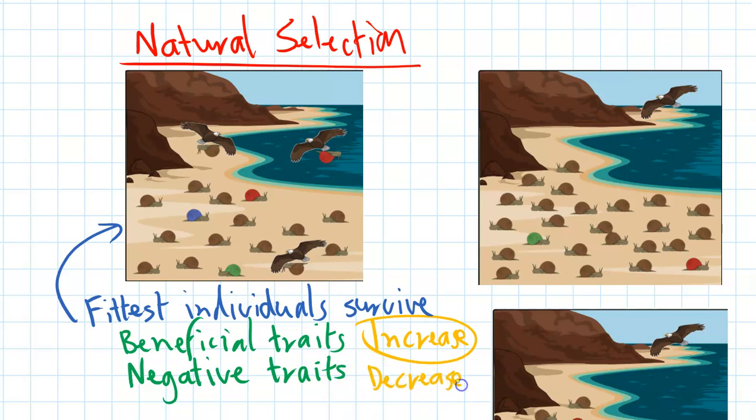In the example here, we've got snails on the beach. The brown snails are the fittest because they blend into the environment better and they're less able to be seen by the eagles and other predators. So over time there'll be fewer colored snails because those negative traits will be lost, and the brown snails are more likely to survive and pass on their genes, so most of the snails will end up being brown in the population.